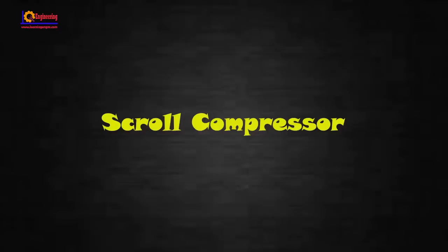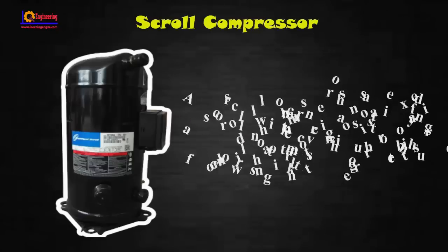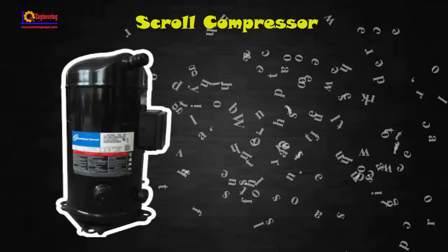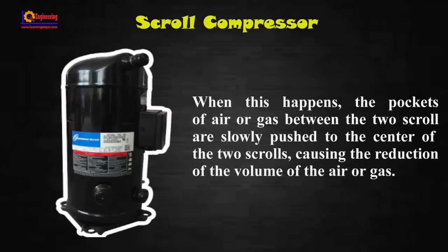A scroll compressor has one fixed scroll which remains stationary and another moving or orbiting scroll that rotates. Through the use of a swing link, the pockets of air or gas between the two scrolls are slowly pushed to the center, causing a reduction in the volume of the air or gas.